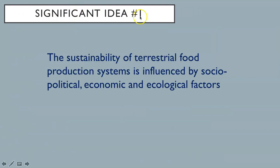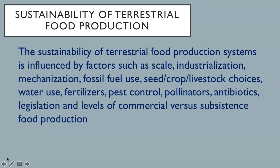Significant idea number one for this subtopic: the sustainability of terrestrial food production systems is influenced by socio-political, economic, and ecological factors. The sustainability of terrestrial food production systems is influenced by factors such as scale, industrialization, mechanization, fossil fuel use, seed crop livestock choices, water use, fertilizers, pest control, pollinators, antibiotics, legislation, and levels of commercial versus subsistence food production.